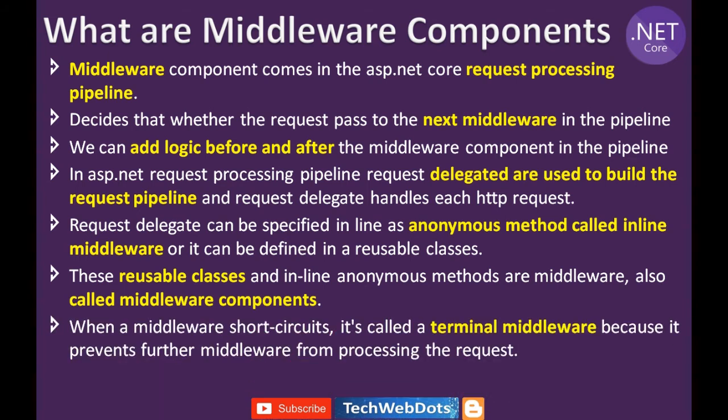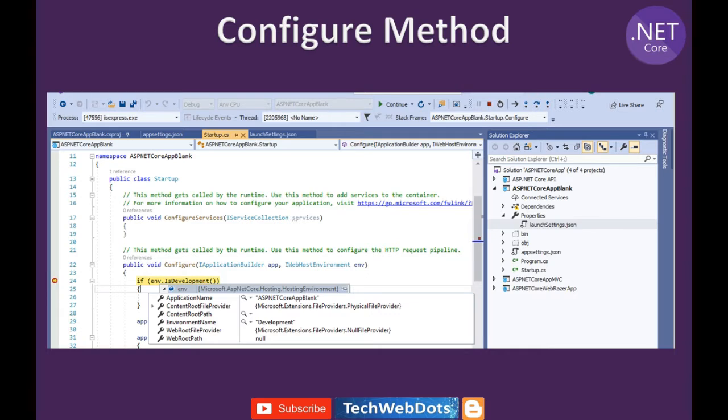When a middleware short-circuits, it means it calls a terminal middleware because it prevents further middleware from processing the request. In the current middleware, we can specify any logic — pre or post-processing — and based on that it decides whether the request should go to the next middleware or not, and how to handle any errors in the request processing pipeline.